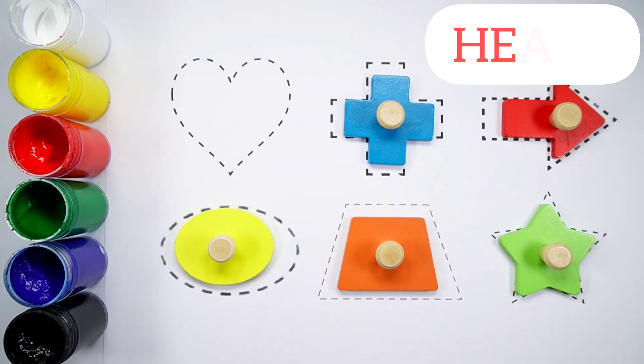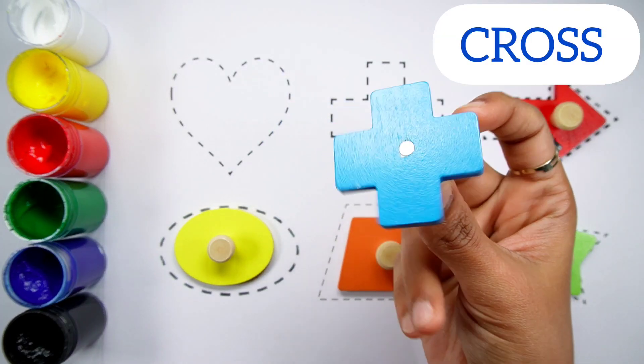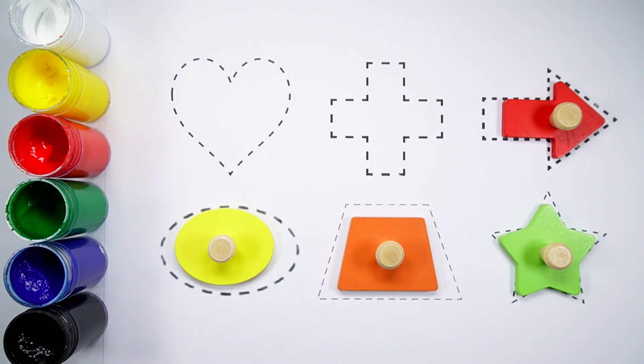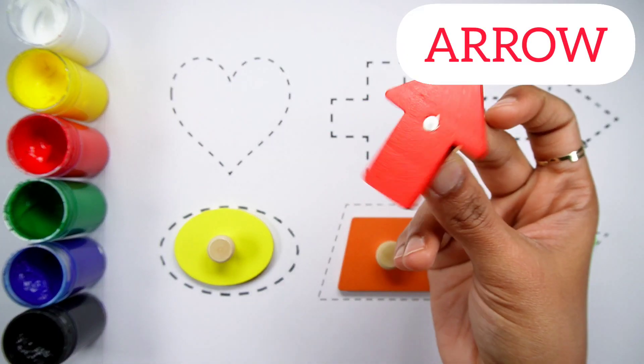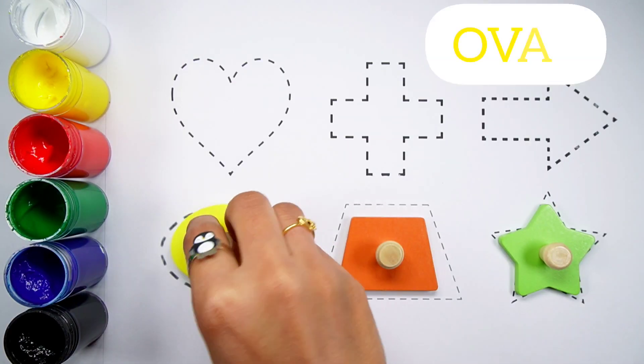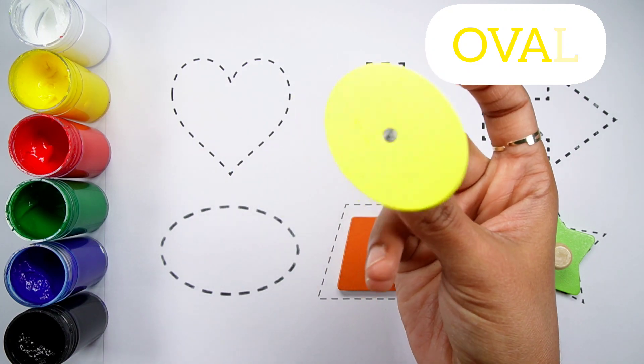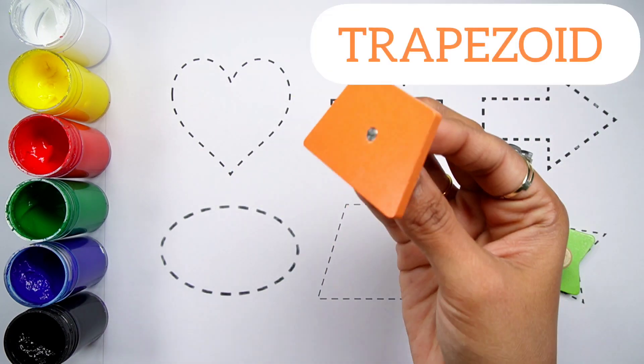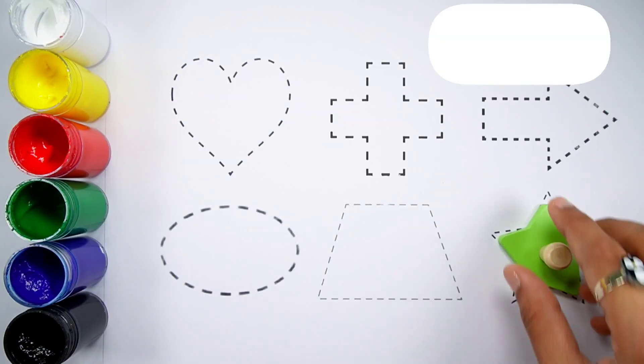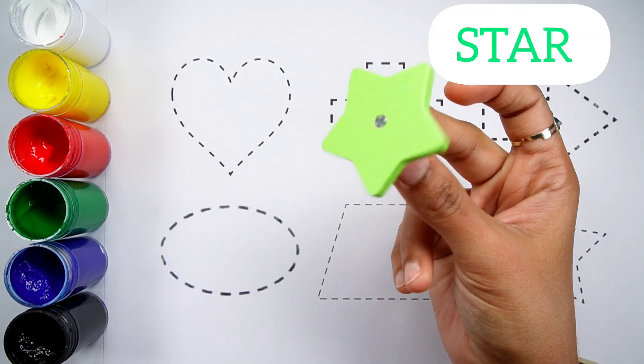Heart, a red heart. Cross, a blue cross. Arrow, a red arrow. Oval, a yellow oval. Trapezoid. Star, a green star.